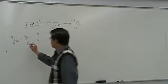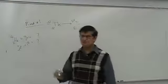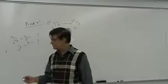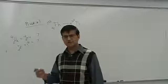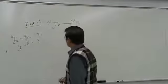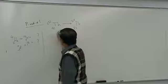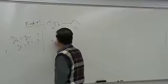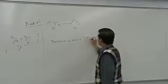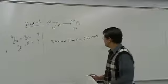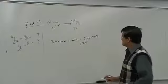Beta is nothing but an electron, written as minus-one-zero. The top number is mass — the electron has a very small mass, so we treat it as negligible compared to a proton or neutron. We write it as zero. Now, the change in mass as thorium changes to lead: 232 minus 208 equals 24. The mass decreases by 24 units.